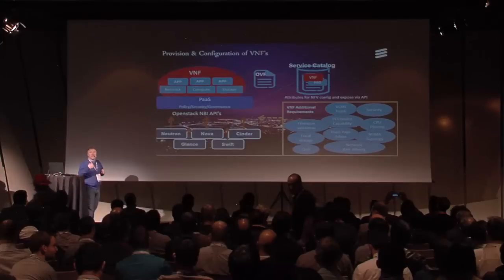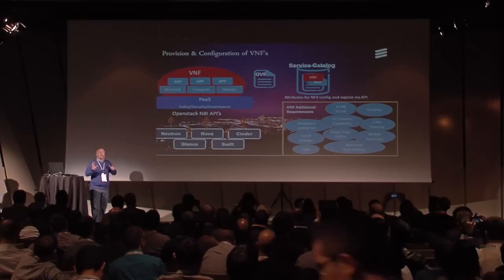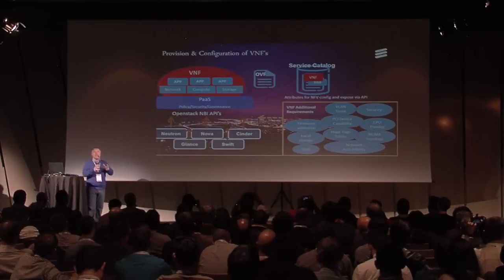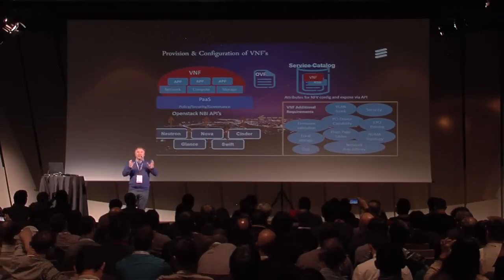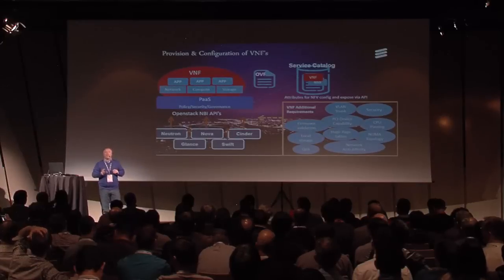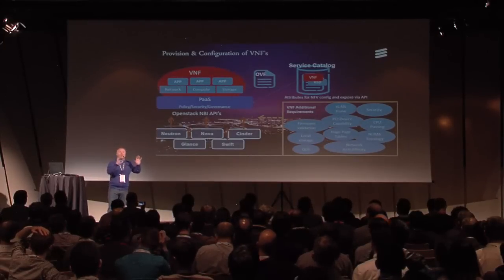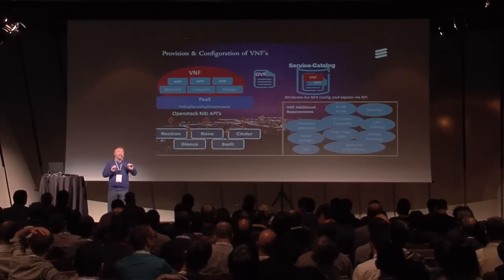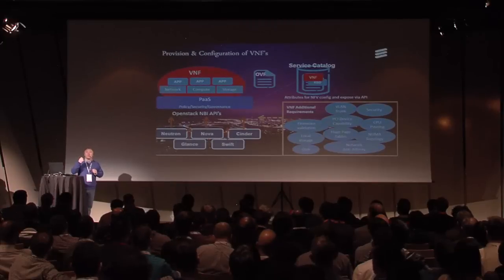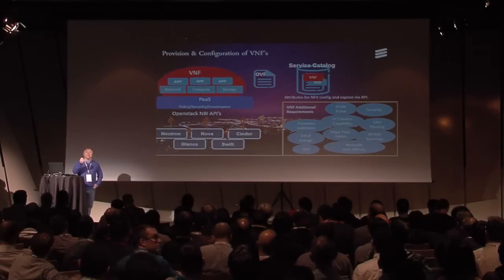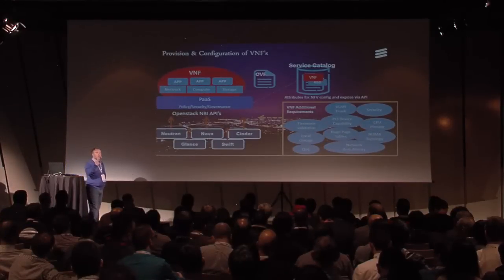What does it really mean to provision and configure a VNF on a cloud infrastructure system? It means you have configuration files and service catalogs that all need to be tied together. A VNF is not just a single service or single instance — it's a collection of applications, containers, and VMs. Configuration formats like OVF and TOSCA define how the VNF should be provisioned using OpenStack APIs. The service catalog contains a network service descriptor that defines how those VMs, applications, and containers are tied together to make up the complete VNF.